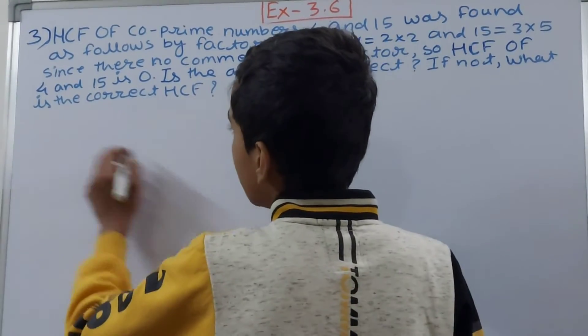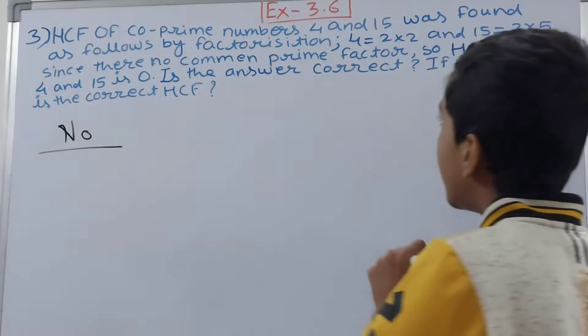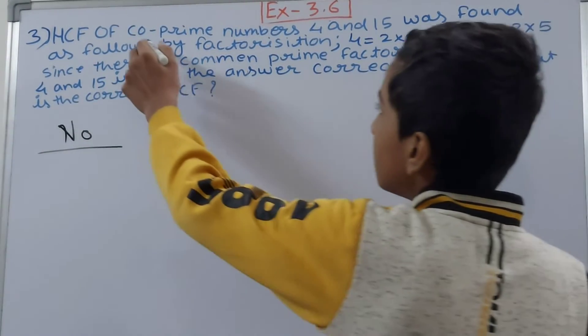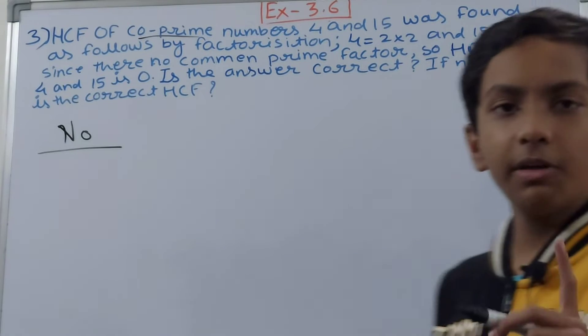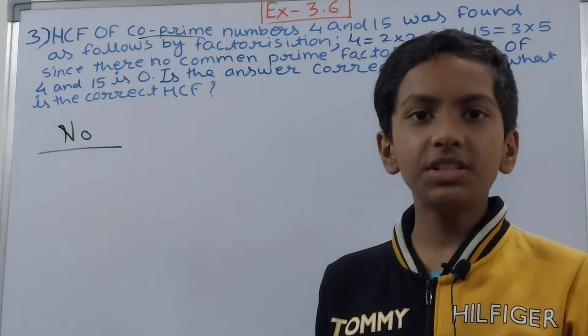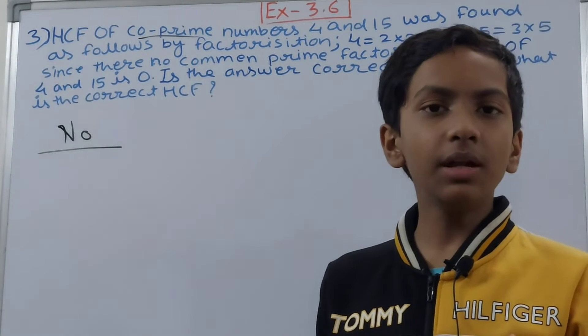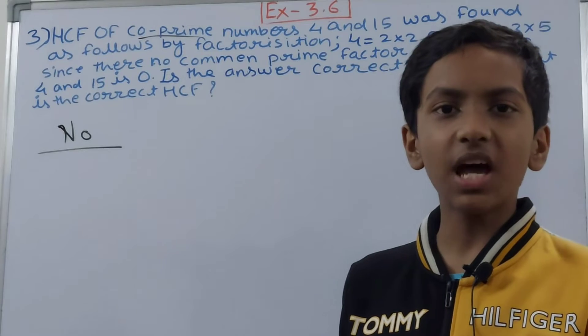So we will write here: No, it is wrong. And firstly, you can see it is co-prime numbers here. Now when I say co-prime numbers, a pair of two numbers which have their common factor as only one. It is not that they don't have any common factor.